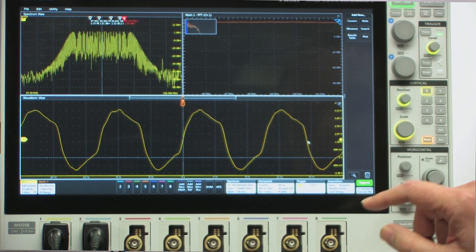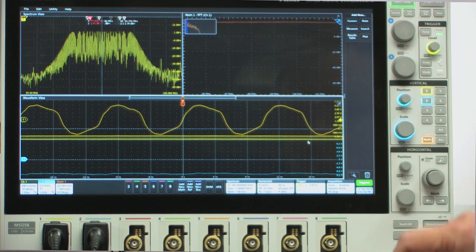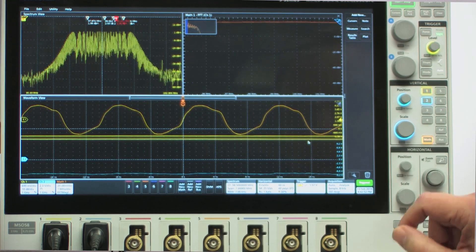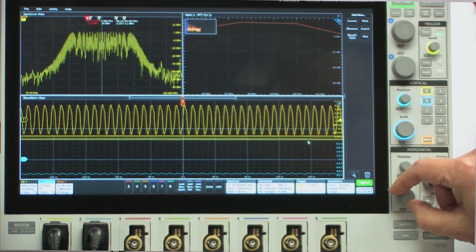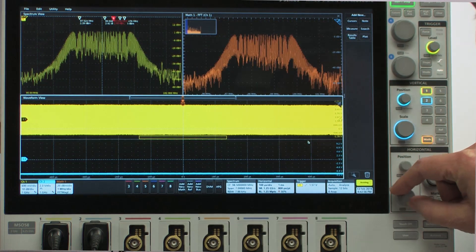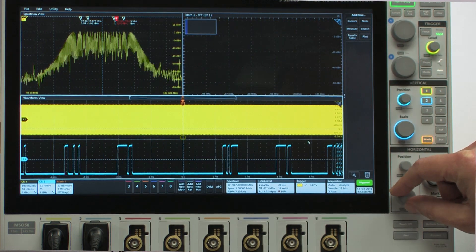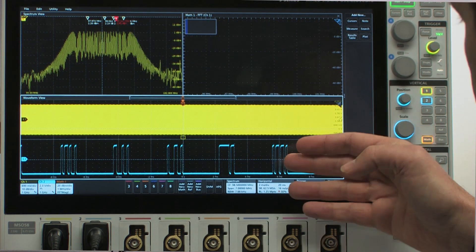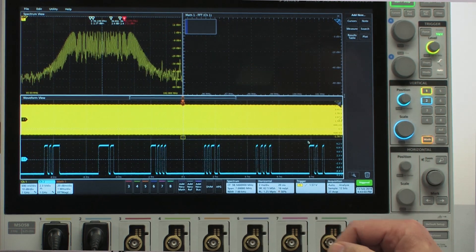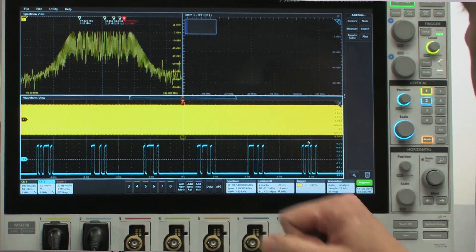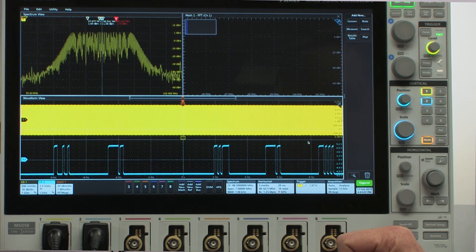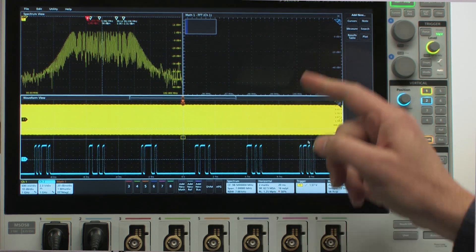So now what happens if we go to slower time per div settings? For example, on channel 2 I'm looking at an RS-232 control signal, so if I go to where I can see several cycles of the RS-232 signal and again observe my frequency domain displays, notice that Spectrum View is again rock solid, still showing the exact same information.